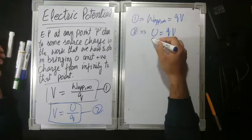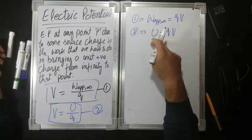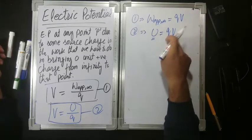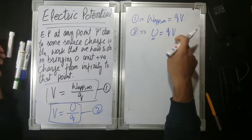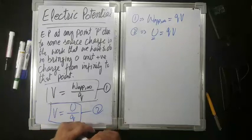Remember, this is not the total potential energy of the system — this is energy associated with q at that point. So q aur potential ka multiplication karna hai.